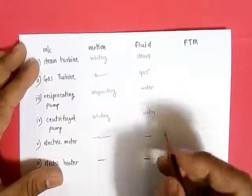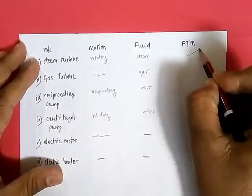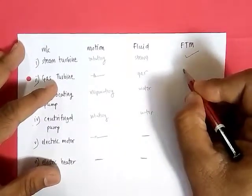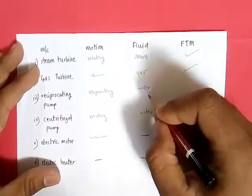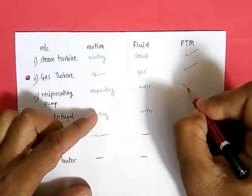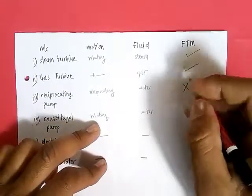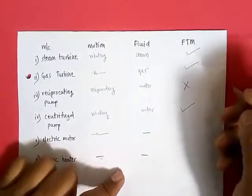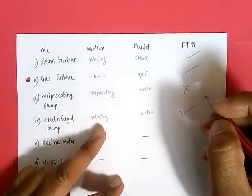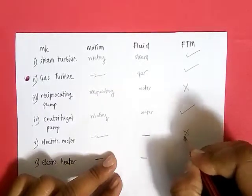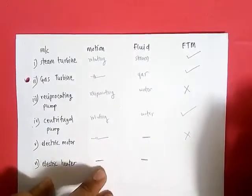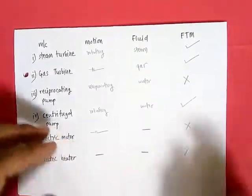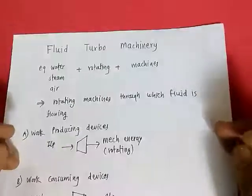So for steam turbine, motion is rotating and there is a fluid, so it is a fluid turbo machine. Gas turbine: motion is rotating and fluid is gas, so it is again a fluid turbo machine. Reciprocating pump: there is a fluid but the action is reciprocating, so it is not a fluid turbo machine. Centrifugal pump: fluid is water and action is rotating, so it is a fluid turbo machine. Electrical motor: motion is rotating but there is no fluid, so it is not under the fluid turbo machine category. Electrical heater: it does not satisfy both criteria, so it is not a fluid turbo machine.